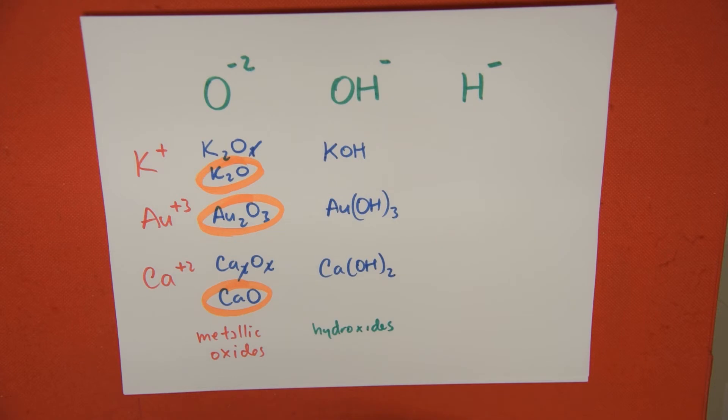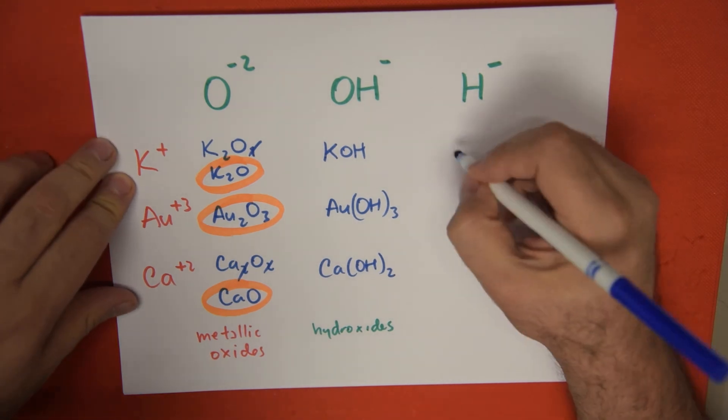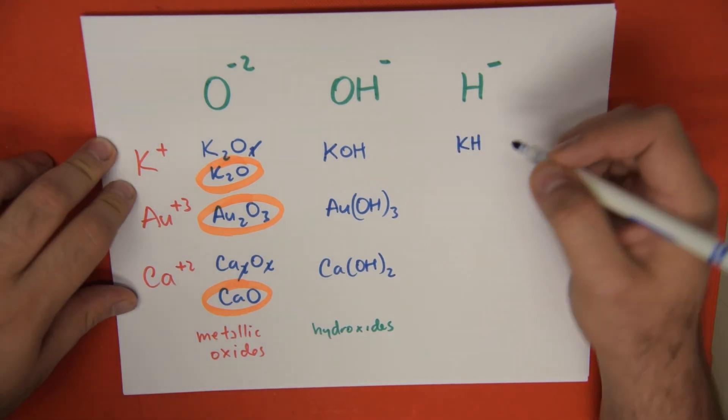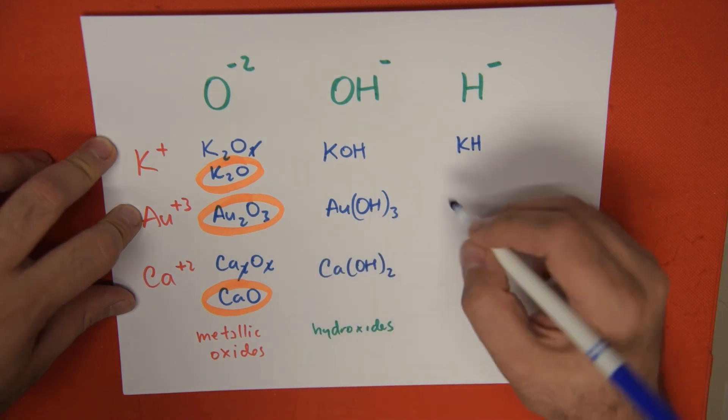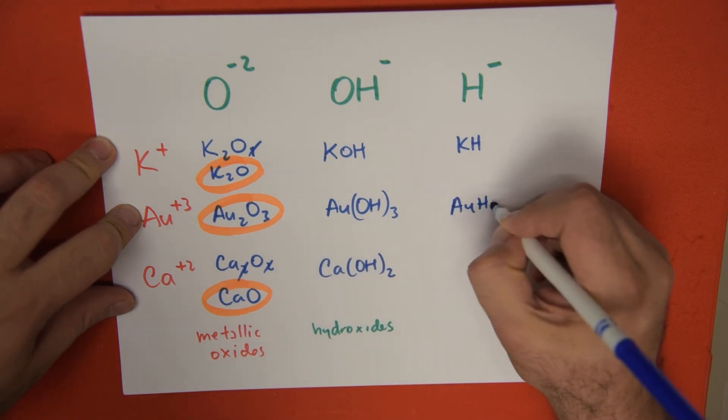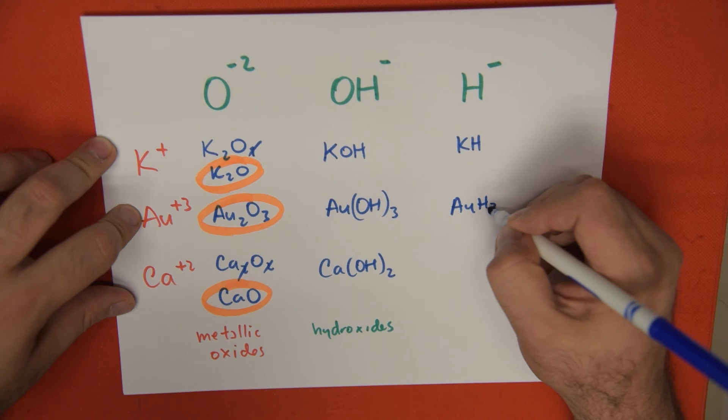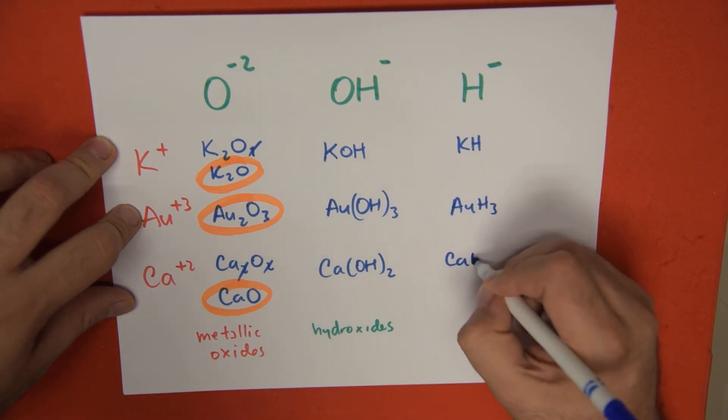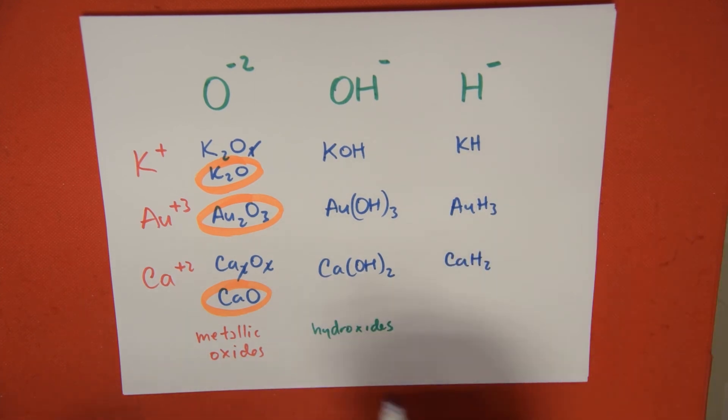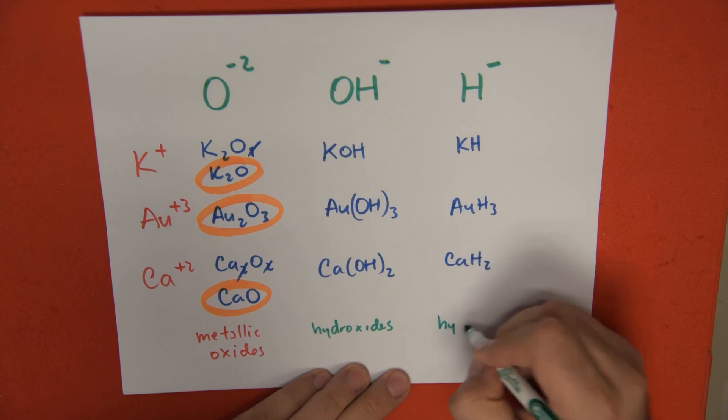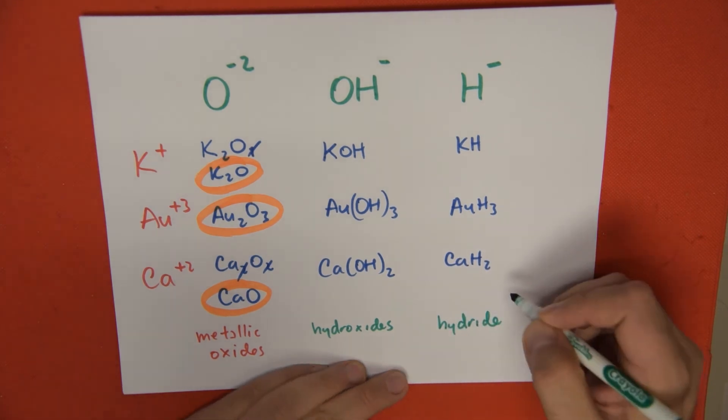Next, we have the same mixture. Hydrogen is -1. Potassium is +1. So we get KH. Next, we get this negative number from here, just as we did with hydroxide. We get AuH3, no parentheses, because this is a single atom. And last but not least, CaH2, which is potassium hydride, gold-three hydride, and finally, calcium hydride. So this chemical family is called hydrides.